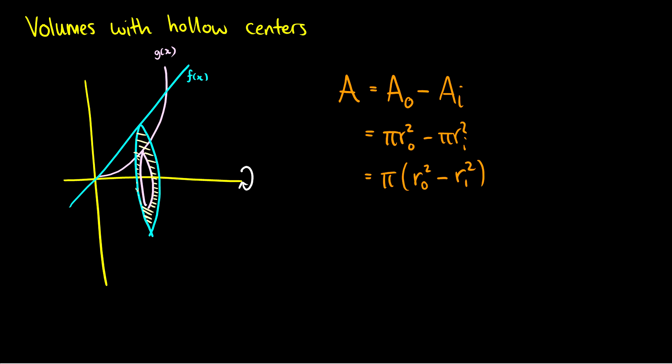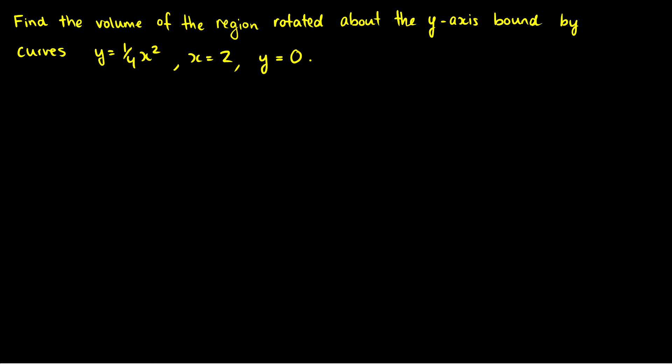Let's do an example — let's make it hard right off the bat and do it around the y-axis instead of the x-axis. We want to find the volume of the region rotated about the y-axis, bound by the curves y = (1/4)x², x = 2, and y = 0.